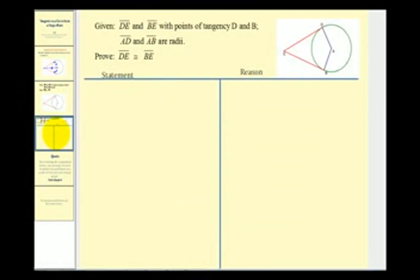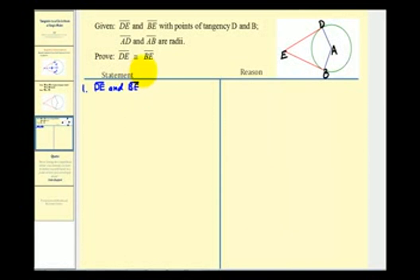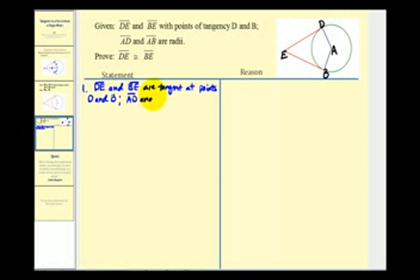So let's go ahead and write this up. This is circle A, and then we have segment BE and segment DE, where point B and point D are the points of tangency. We'll go ahead and state the given: segment DE and segment BE are tangent at those points, and segment AD and segment AB are radii.